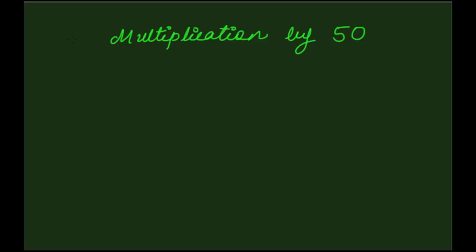Let's also learn the trick to multiply any number by 50. As we know that 50 equals 100 divided by 2. Thus, while multiplying the given number by 50, make sure that we add 2 zeros to the right of the given number and then reduce it to half.